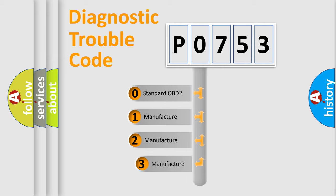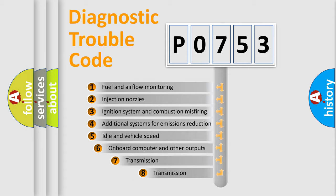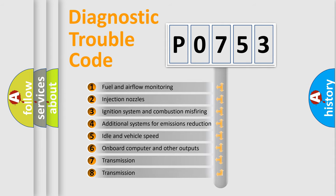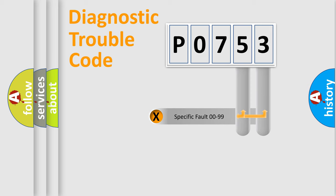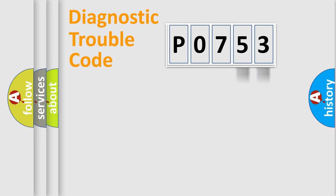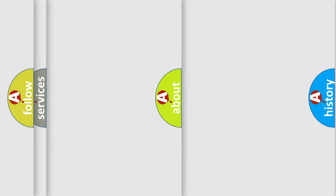If the second character is expressed as zero, it is a standardized error. In the case of numbers 1, 2, or 3, it is a more specific expression of a car-specific error. The third character specifies a subset of errors. This distribution is valid only for the standardized DTC code, and only the last two characters define the specific fault of the group. Such a division is valid only if the second character is expressed by the number zero.